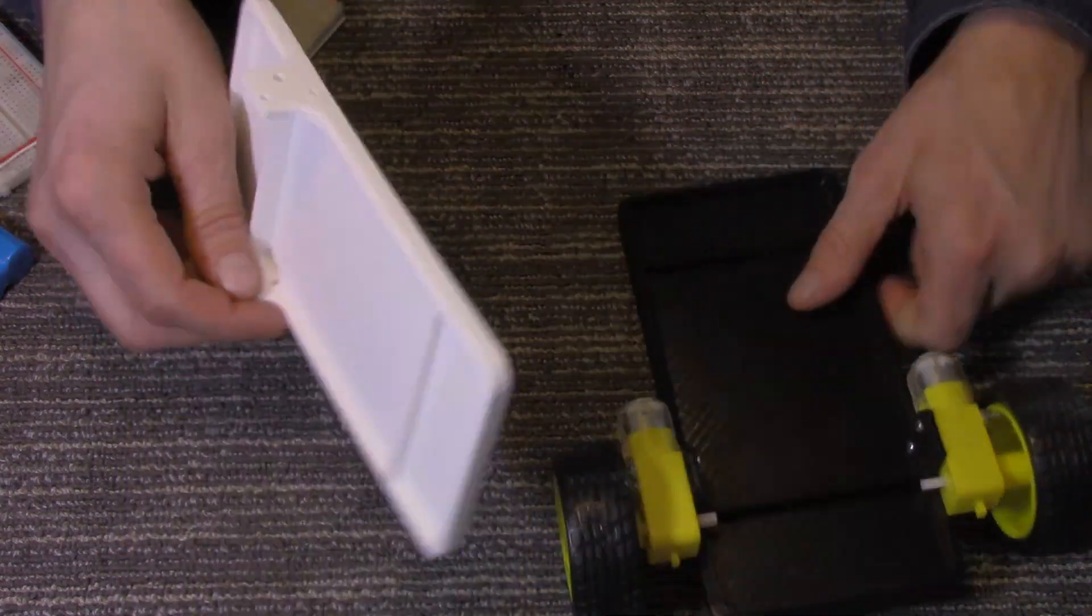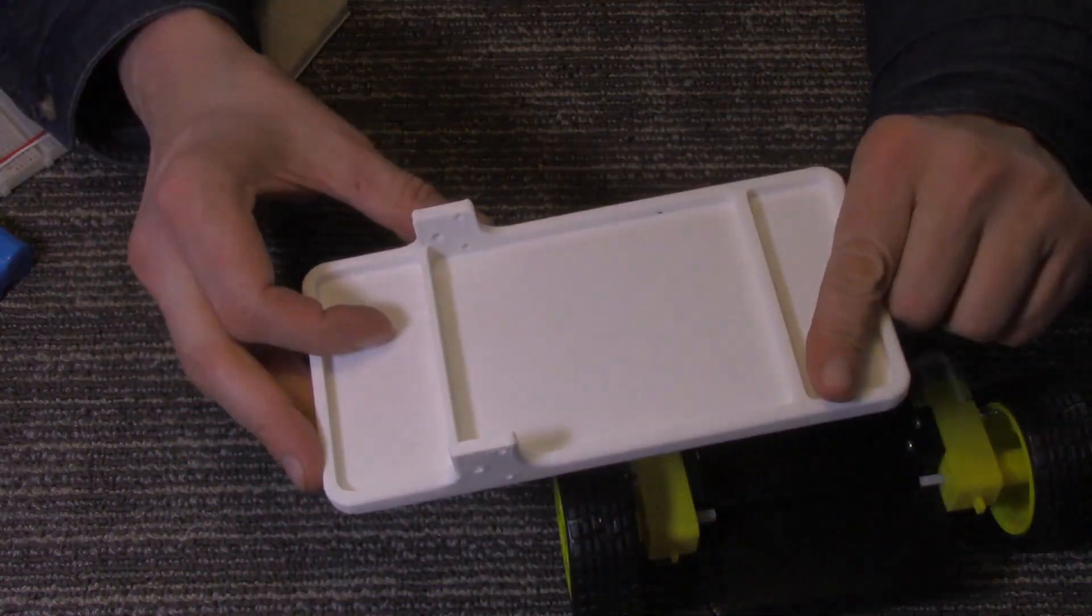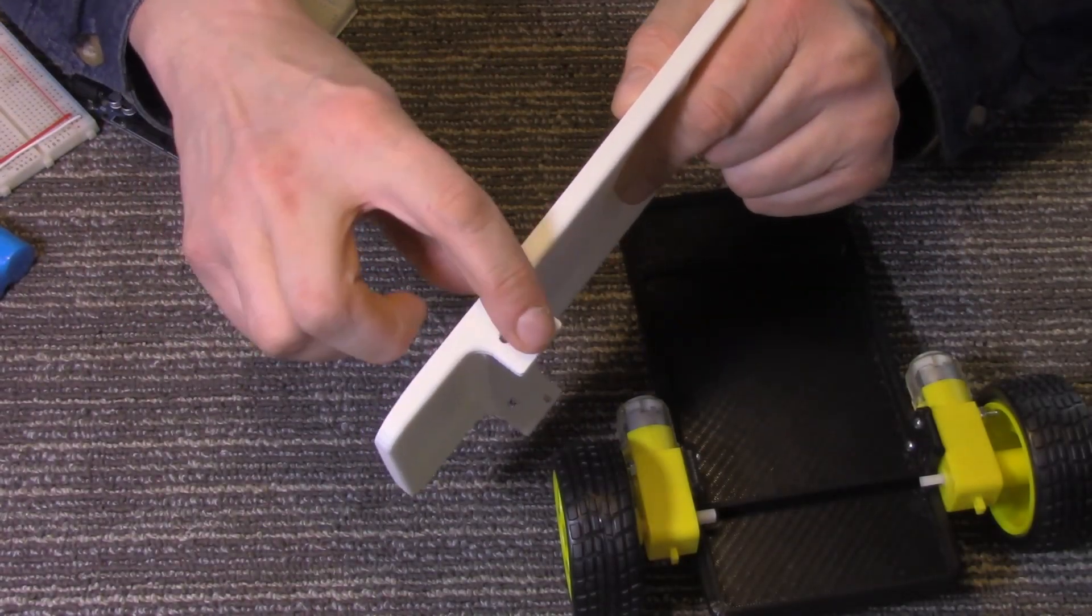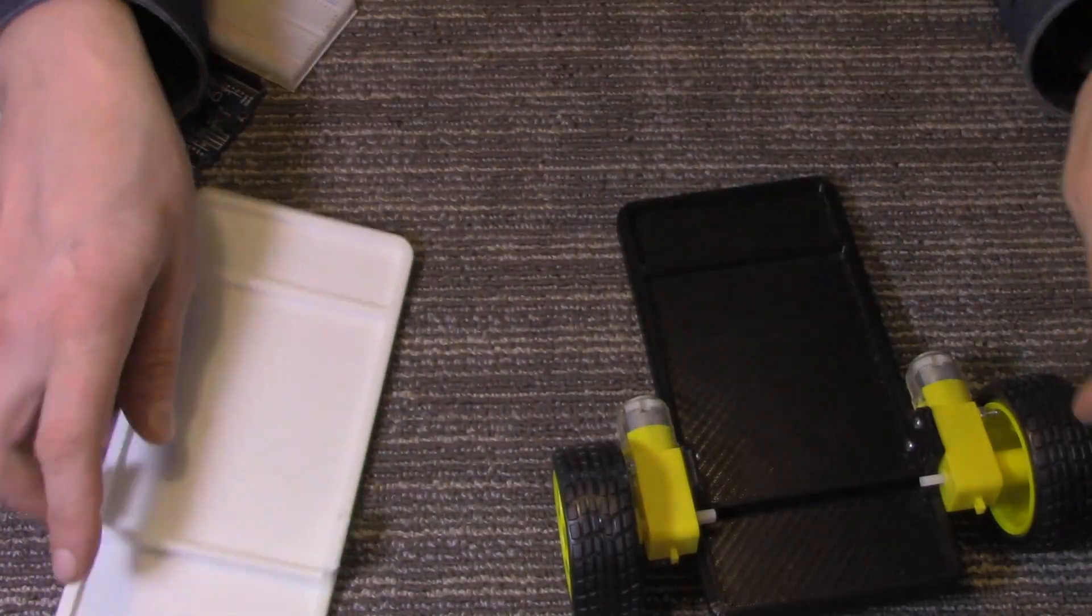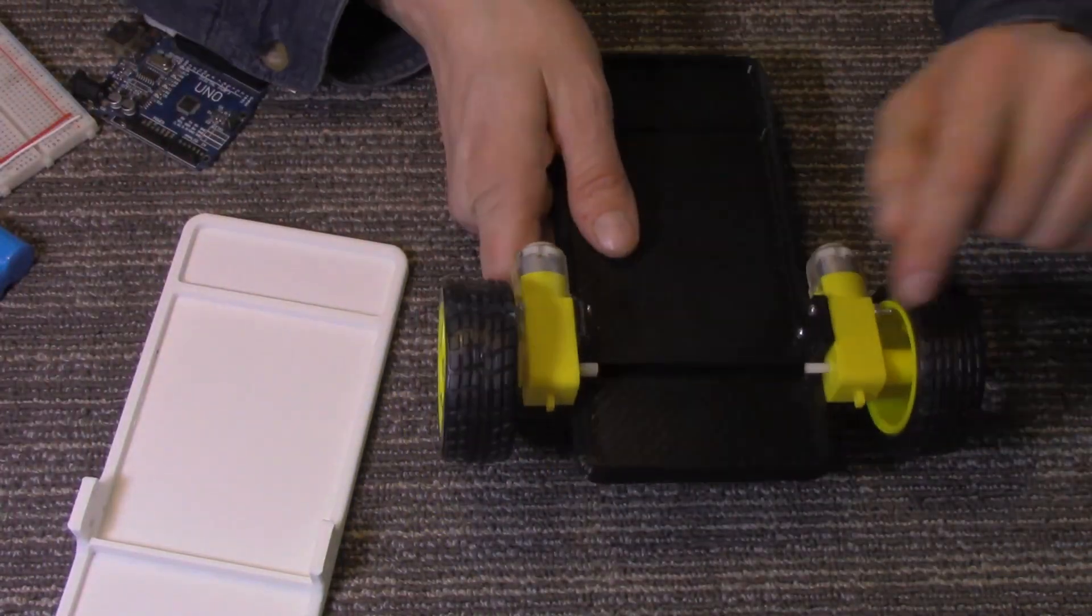Here, I've got one that doesn't have the wheels on it. And it's just got the holes in it, so you can mount your robot wheels on there.